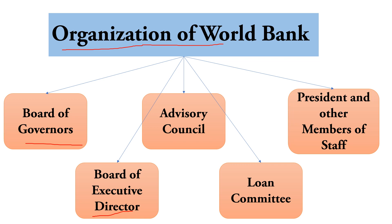The third body is the Advisory Council, appointed by the Board of Directors, consisting of seven members from member countries who are experts in commerce, industry, banking, agriculture, labor, transportation, and law. This committee recommends loans required by member countries. The fourth is the President and other staff members. The President is appointed by the Board of Directors, serves as chief executive of the bank, and is responsible for the conduct of the day-to-day business of the bank.